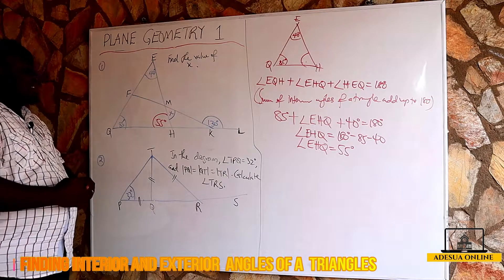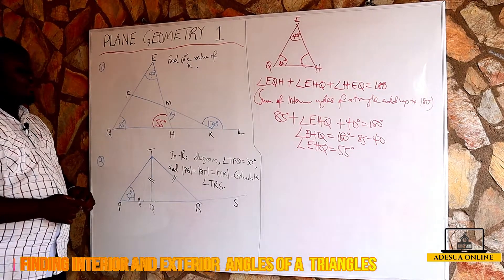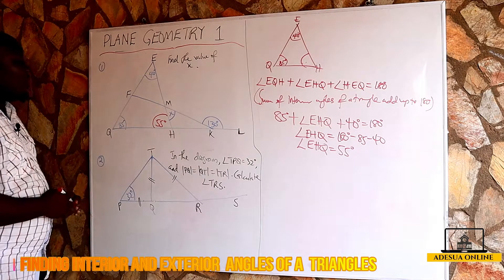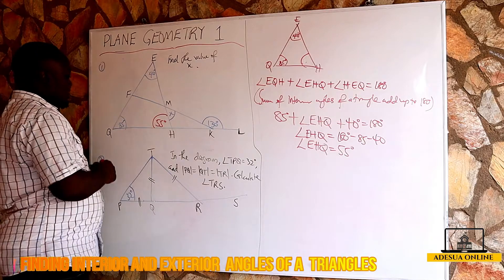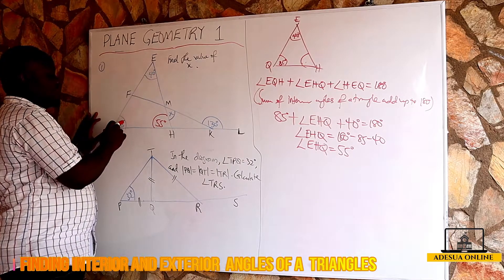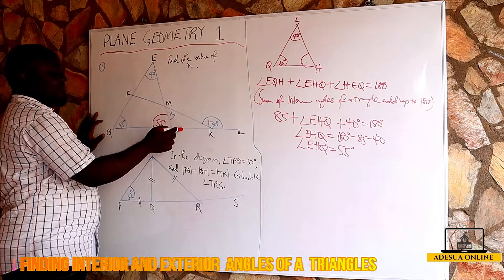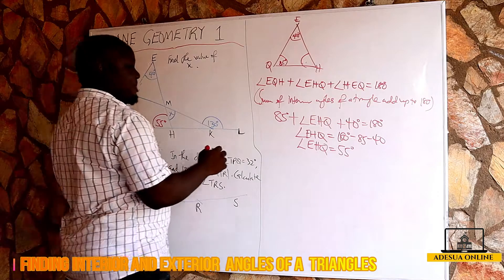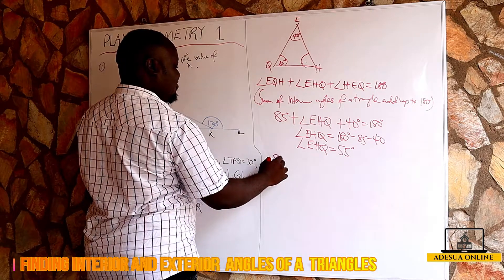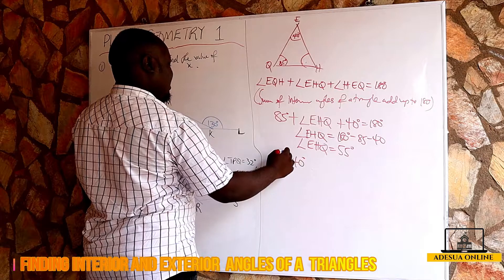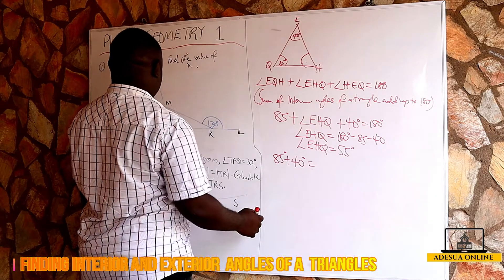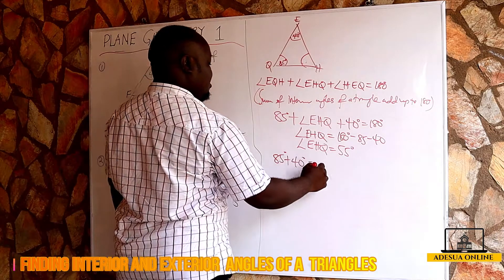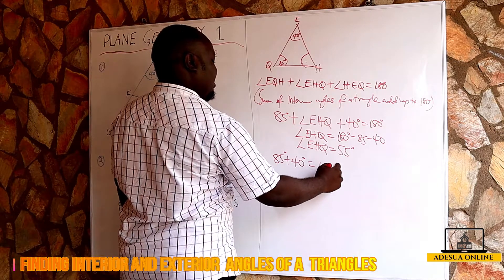We learned in our previous lesson that the sum of two interior angles is equal to the exterior angle of the third side. So we can say that 85 plus 40 is equal to the exterior angle MHQ — angle MHQ.